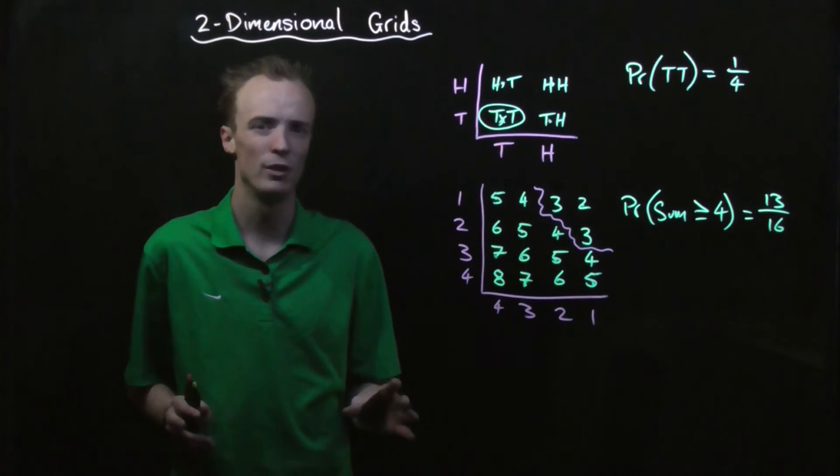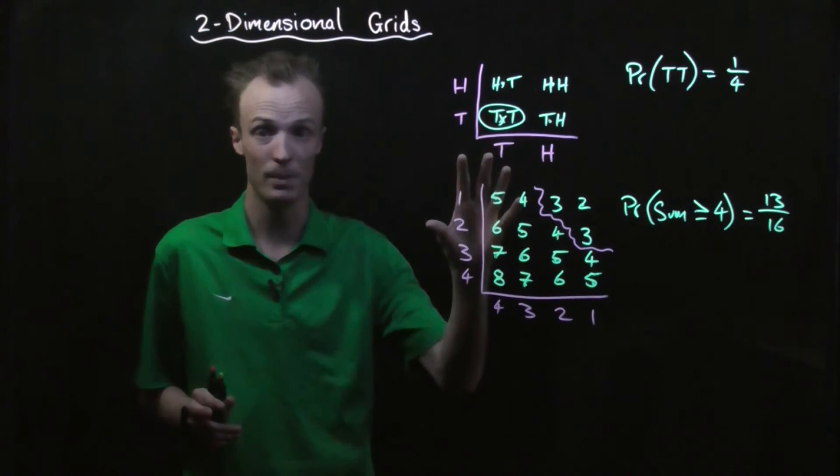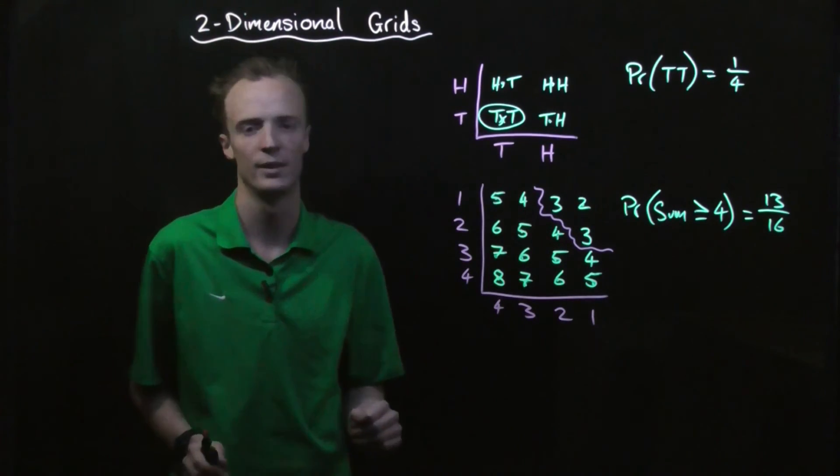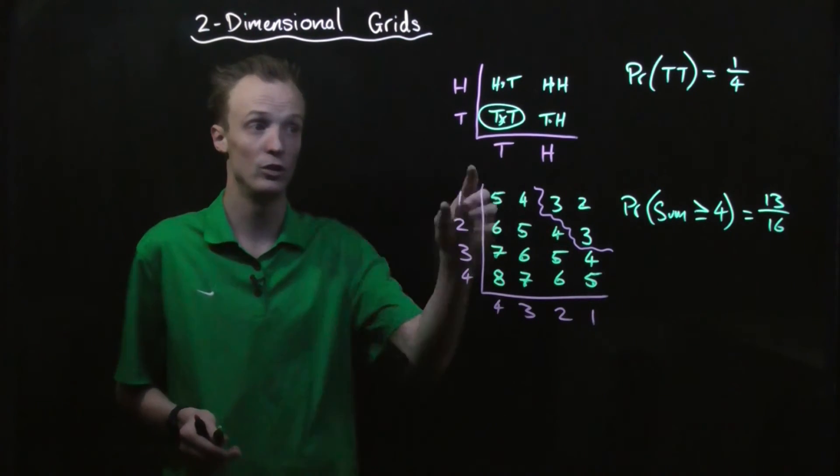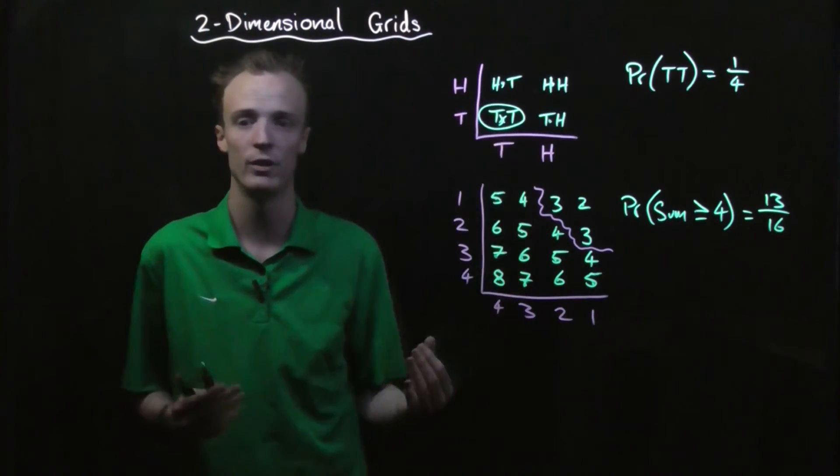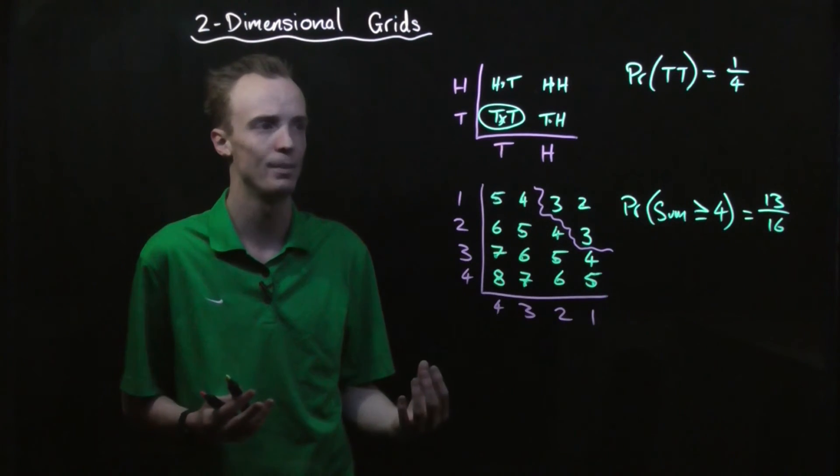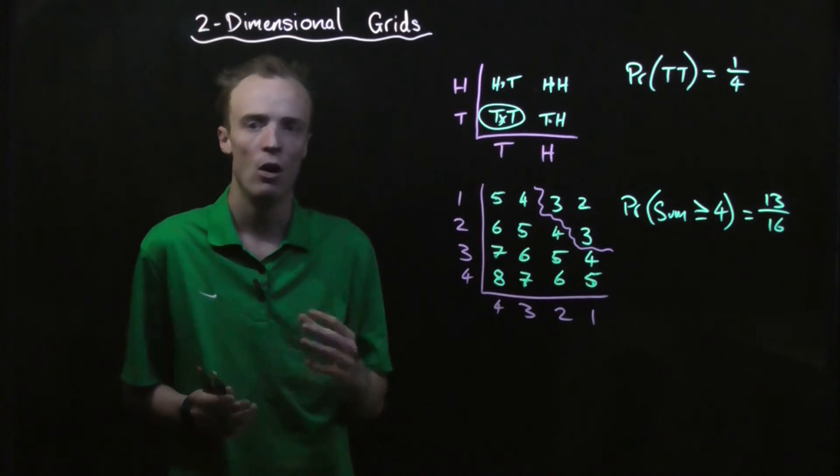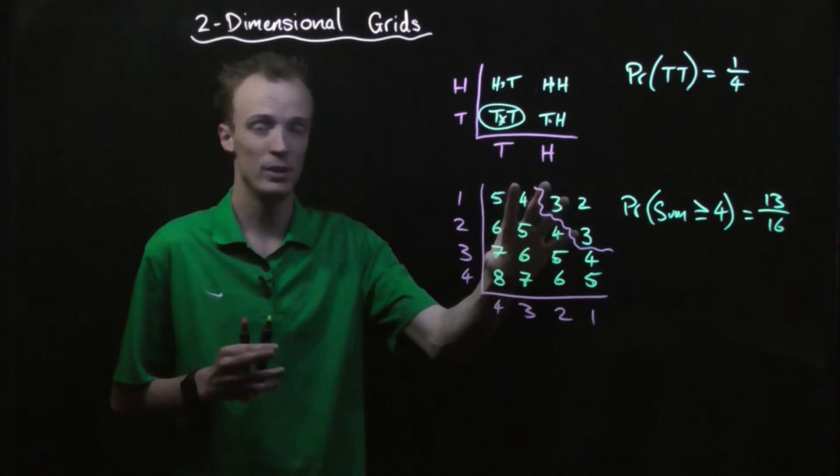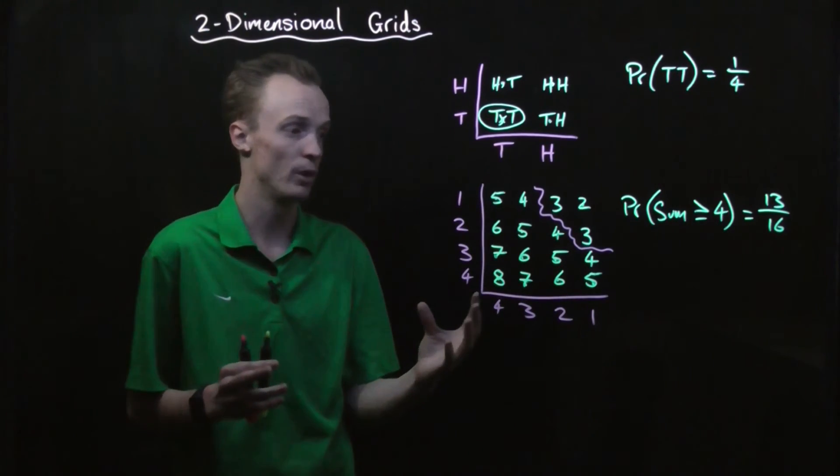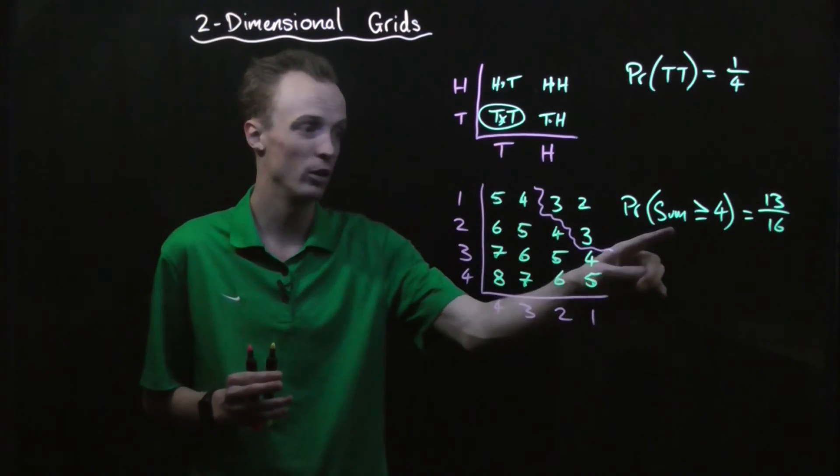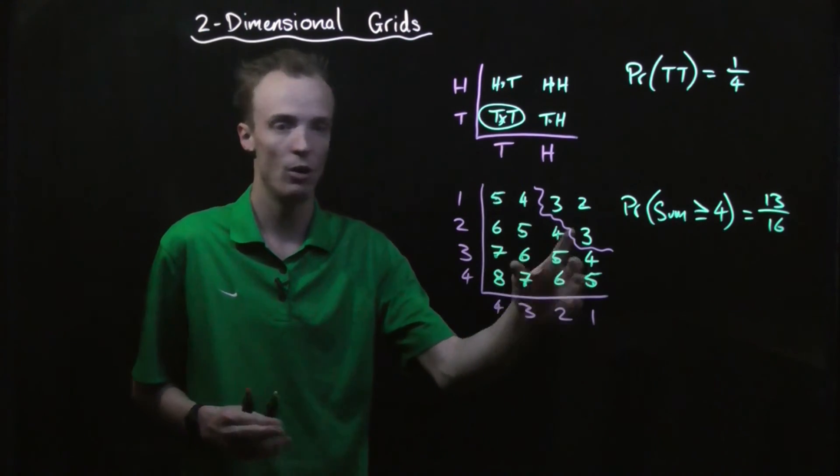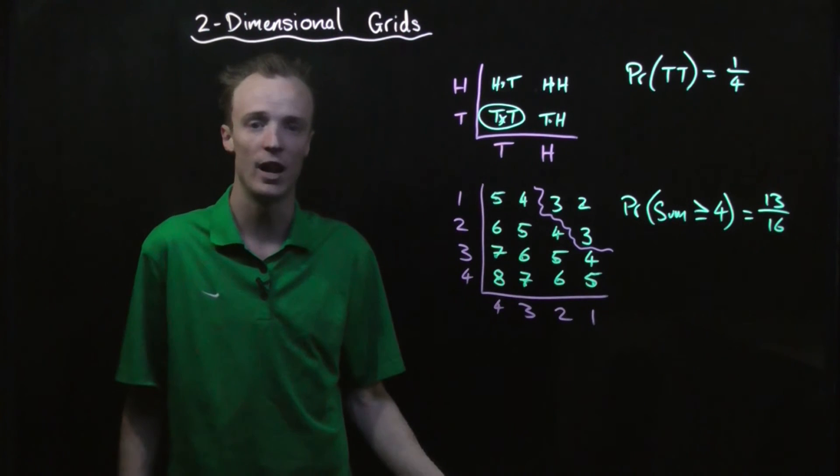So two-dimensional grids are very useful for representing the sample space of two-step events and only two-step events. And they can take various formats. We can use dots to represent each individual outcome of our sample space. We can actually list the outcomes, like I've got here. Or we can use our sample space here to represent special situations. Here, for example, I looked at it when we added the face of the dice together, what the result would actually be for each outcome.